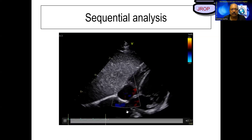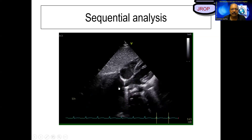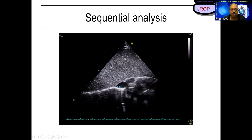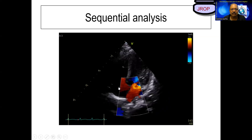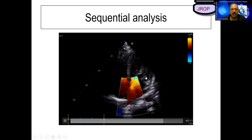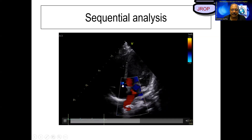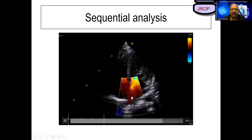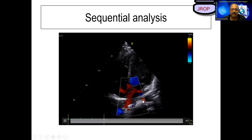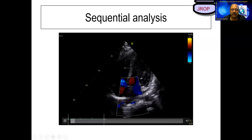We move from the subcostal window tracing our transducer into the apical window. In the apical window, this is morphological RA, and the other structure is morphological LA. We try to trace the pulmonary veins: right upper, right lower, and left lower pulmonary vein are seen. The left upper pulmonary vein is not normally seen.